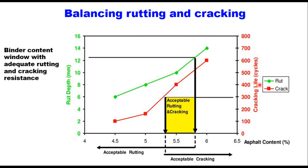This graph shows a binder content window with adequate rutting and cracking resistance. The green line shows how rut depth changes with binder content, and the red line shows how cracking or fatigue life changes with binder content. Given the criteria for rutting and the criteria for cracking, there is a required binder content range for acceptable cracking and another for acceptable rutting. The yellow highlighted zone is the binder content window that satisfies both rutting and cracking requirements.